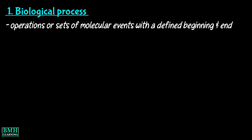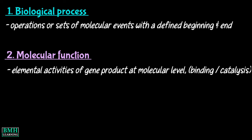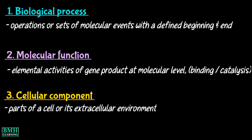The Gene Ontology project provides a set of hierarchical controlled vocabulary split into three categories. First, biological processes — operations or sets of molecular events with a defined beginning and end. Second, molecular function — the elemental activities of a gene product at the molecular level, such as binding or catalysis. Third, cellular component — the parts of a cell or its extracellular environment.